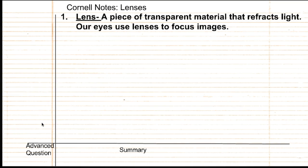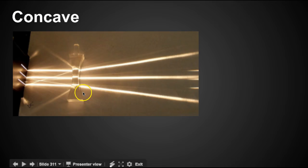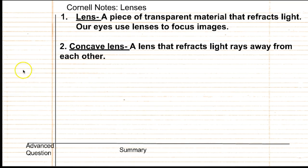A concave lens. A concave lens is a lens that refracts light rays away from each other. Here's an example of a concave lens. You can see the light beams are being pushed away from each other. Sometimes we use concave lenses in glasses, also in other applications which we'll talk about later on in the notes. Go ahead and come up with a question for two, and when you're ready, we'll move on to three.